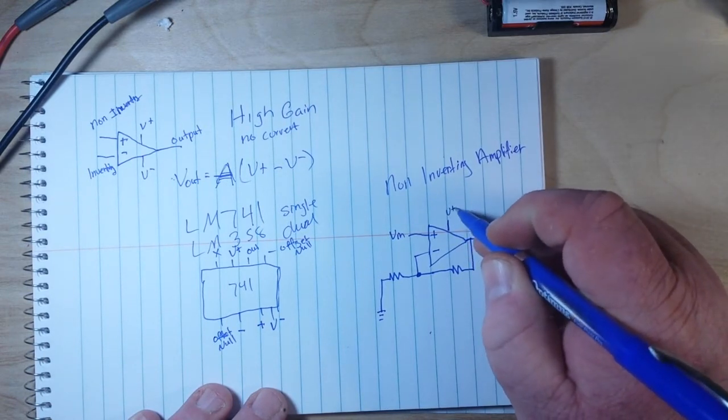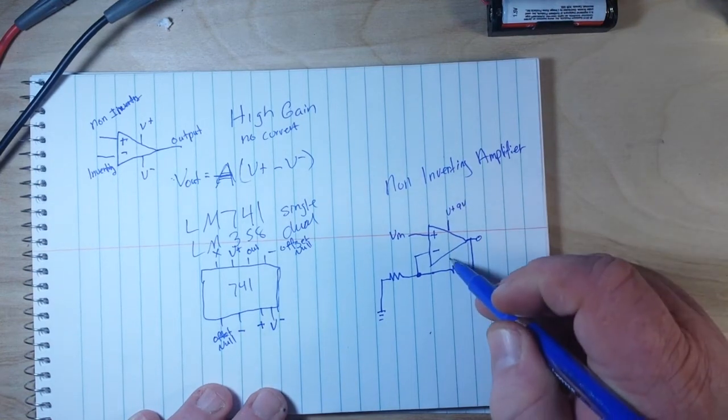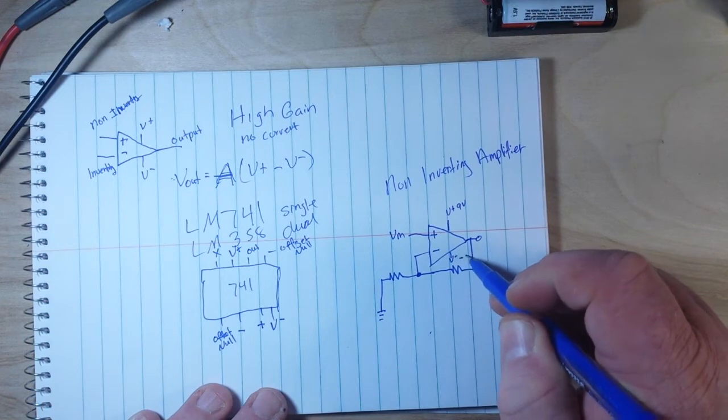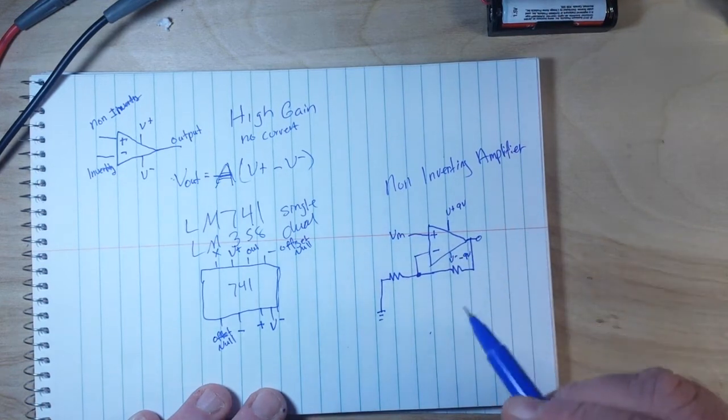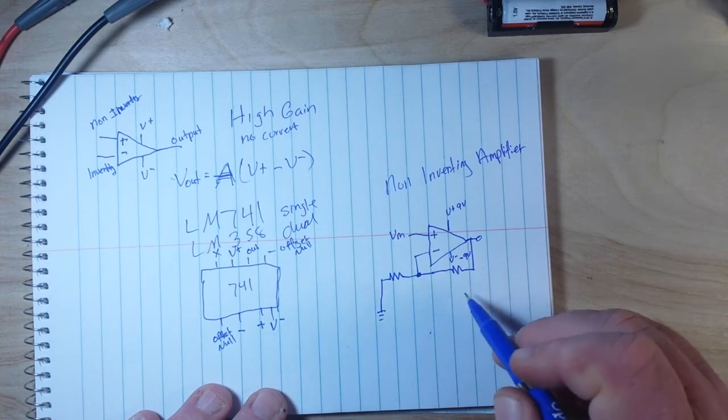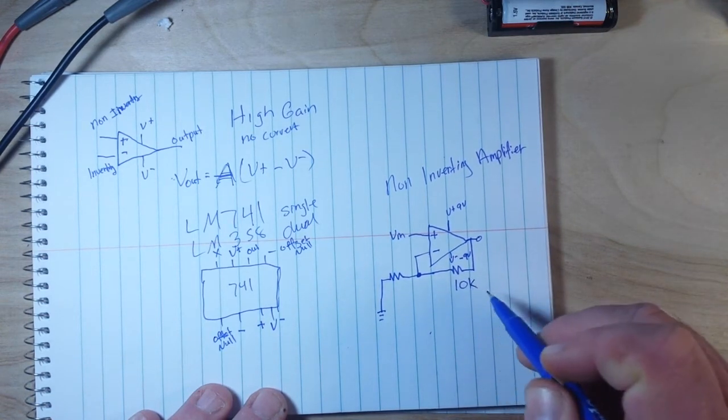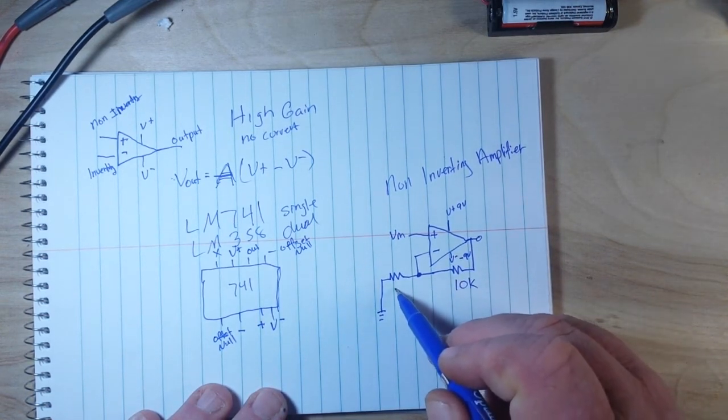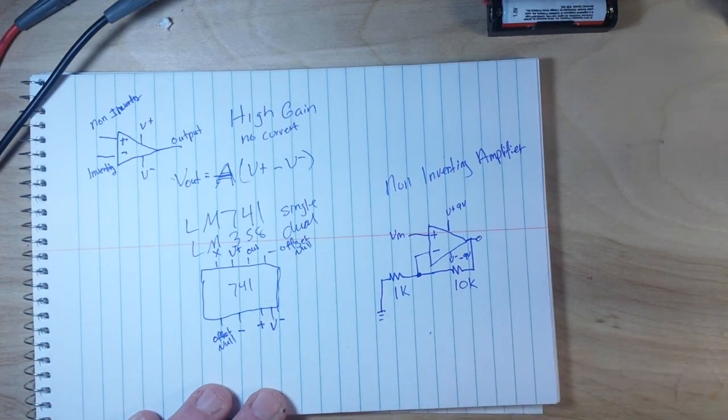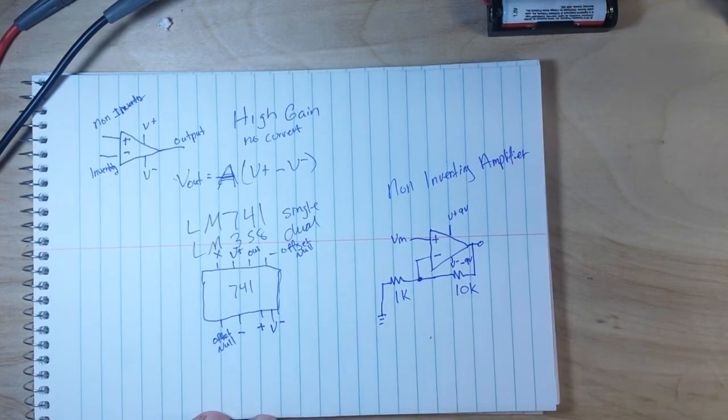So our V plus will be nine volts and our V minus will be minus nine volts. And our divider is going to be a 10k resistor and a 1k resistor. And that should give us a gain of around 11.